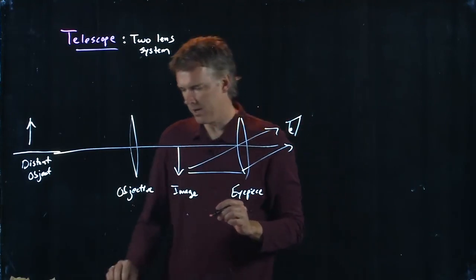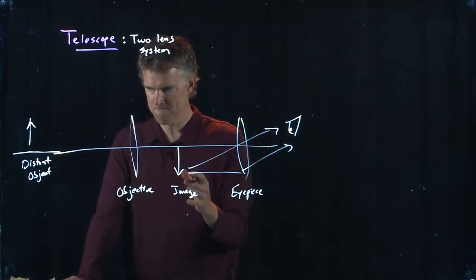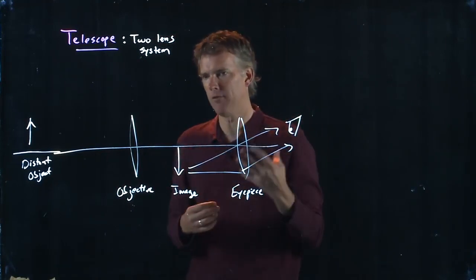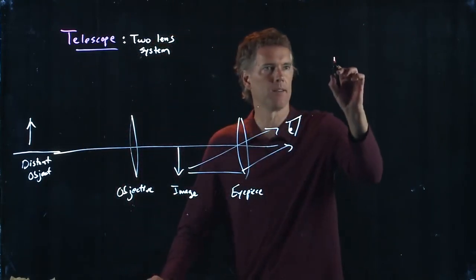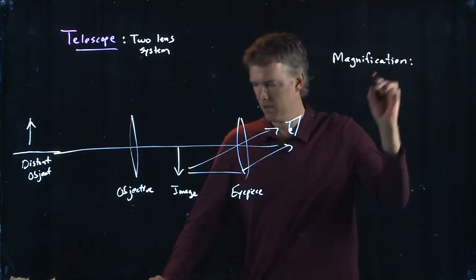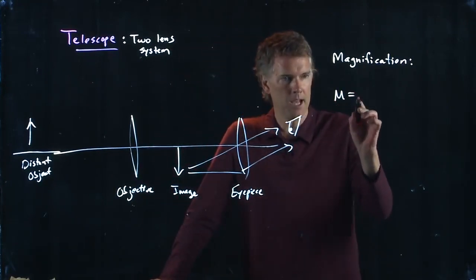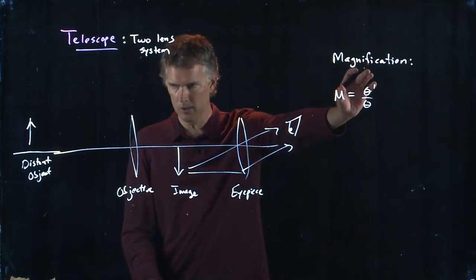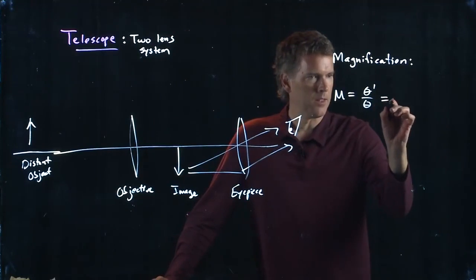So there is another derivation that goes along with this problem that is a little bit tricky. But the idea is when you are looking at this image, it can in fact look a lot bigger than it would look if you're looking straight at the object. And there is a magnification for the telescope, which is the following. M is again given by theta prime over theta. What is the angular magnification with the telescope versus without the telescope?